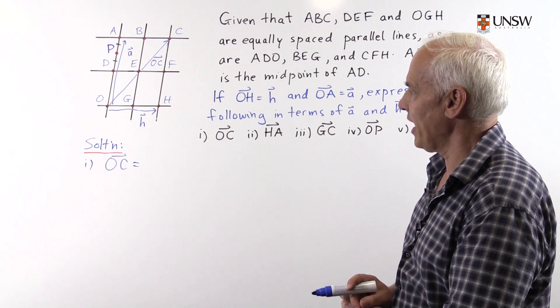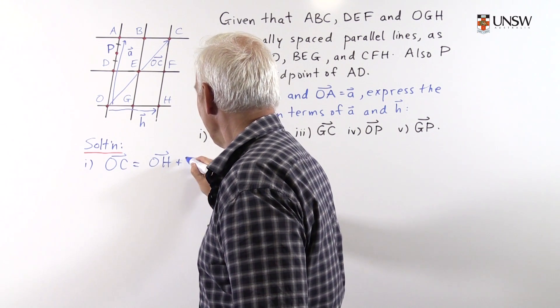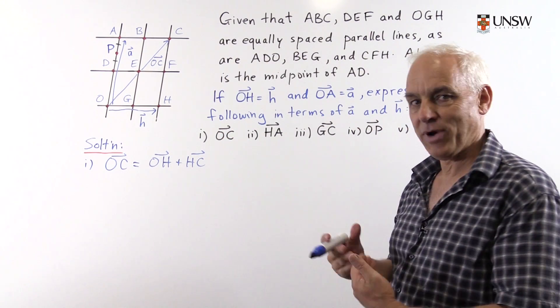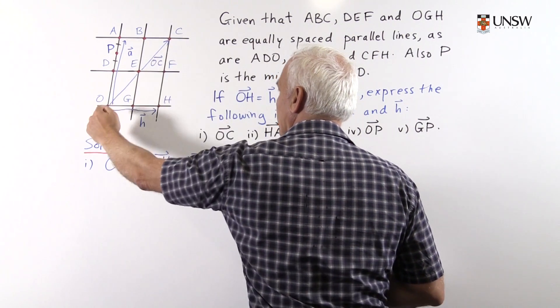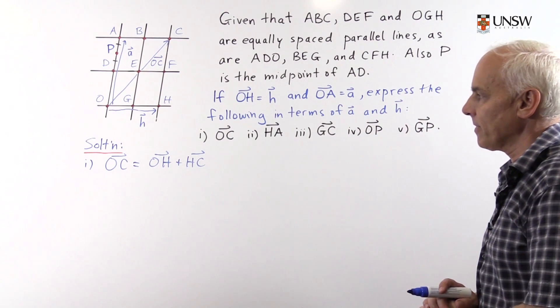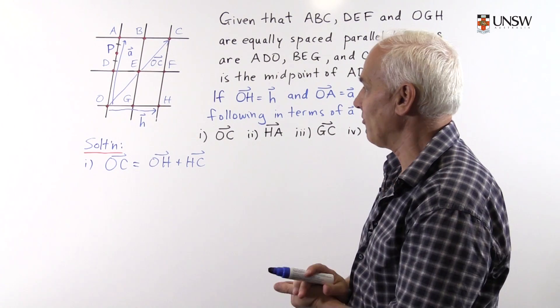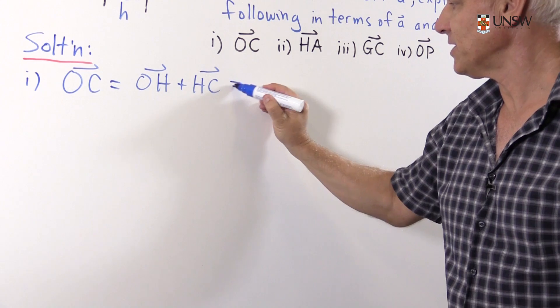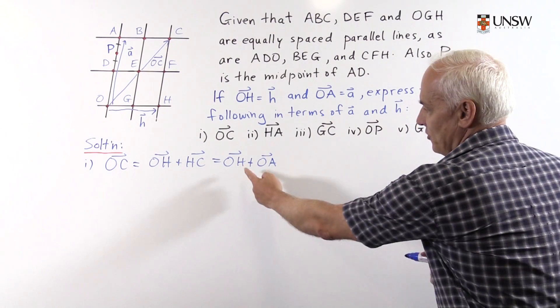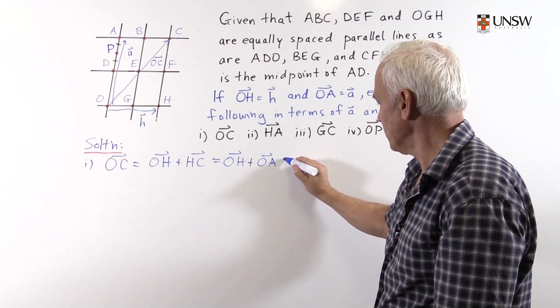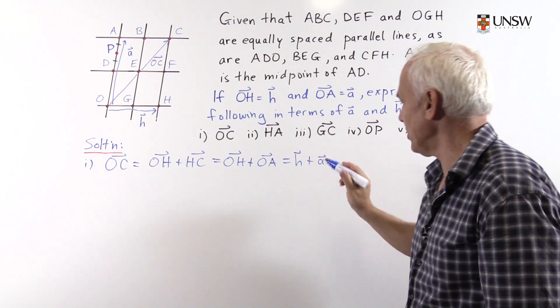So how do we express OC in terms of H and A? Well, we can write OC as the vector OH plus the vector HC. That's the way we combine or add geometrical vectors. This vector here followed by this vector there gives a cumulative effect of going from here to here. Now the vector HC is parallel to and has the same displacement as the vector OA. So this is the same as OH plus OA. And these are the two basic vectors that we're referring to. So this is H plus A. So we've expressed OC in terms of H and A.